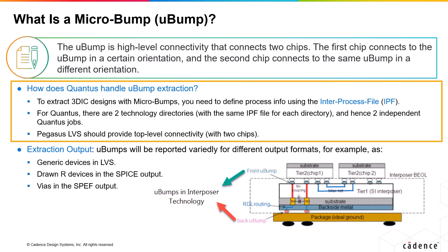In the IPF file, you can model the micro bumps and their background dielectric layers. To do this, a new section called 'inter_process' is added to the ICT file. For Quantus, there are two different technology directories with the same IPF file inside each technology directory.